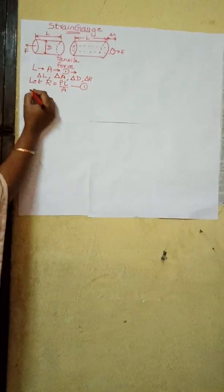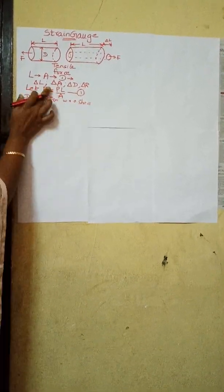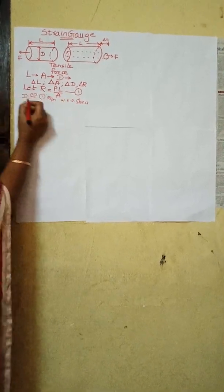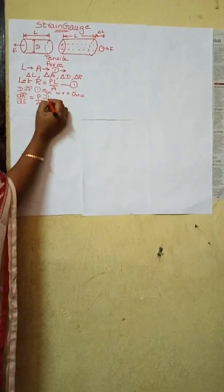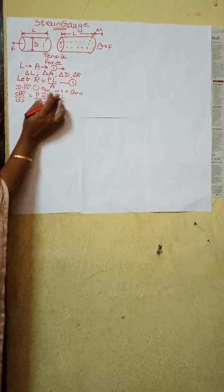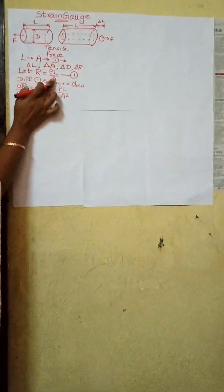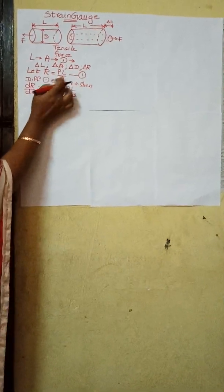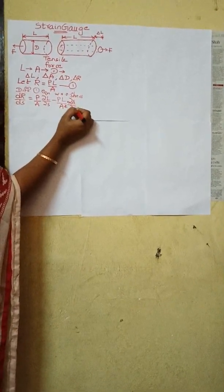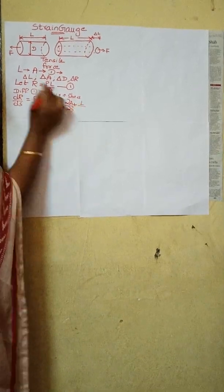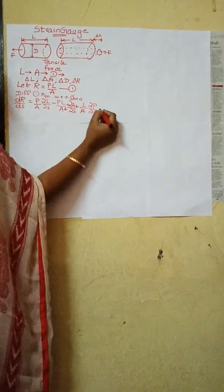Now differentiate the above first expression with respect to stress. The equation becomes: ∂R/∂S = (ρ/A)(∂L/∂S). Taking each parameter one by one as a variable quantity, the next term is (ρL/A²)(∂A/∂S). You need to differentiate the above equation with respect to stress, taking each parameter as a variable quantity. Let this be your second equation.